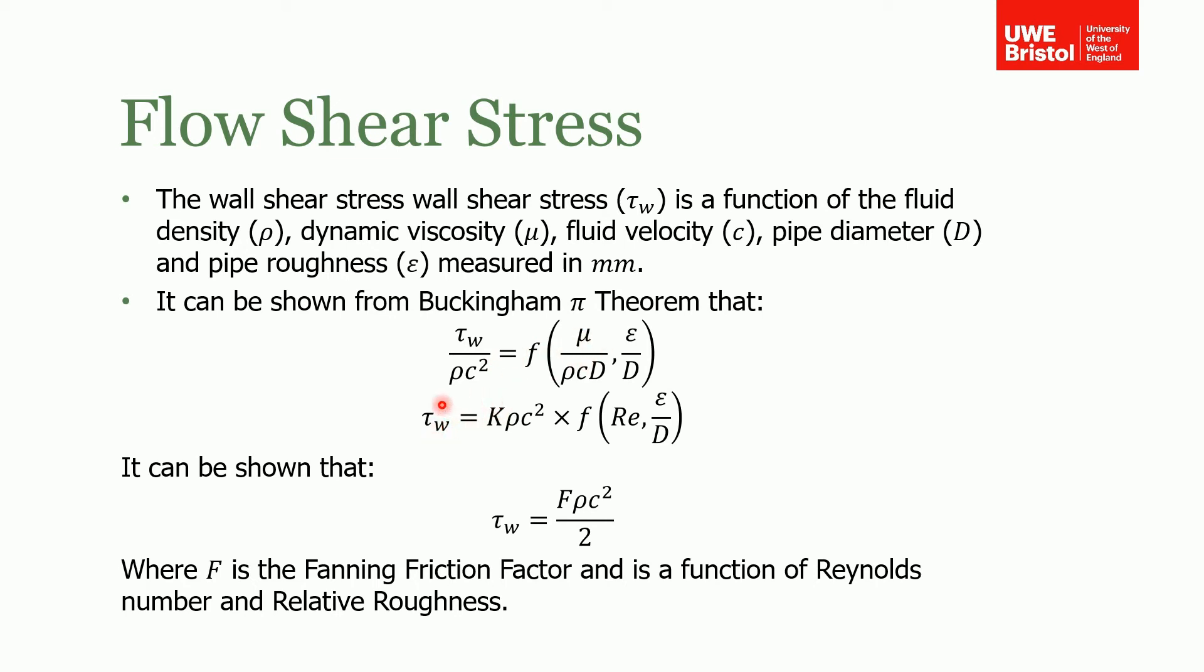Because we know this relationship, we can write the shear stress as some constant times the density times velocity squared, times this function of Reynolds number and pipe roughness. All those constants are wrapped up into this F here—note this isn't force, but the Fanning friction factor. As I said, it is a function of Reynolds number and relative roughness, so we can work out what this factor is and find the shear stress.